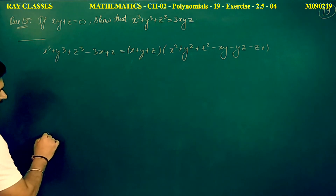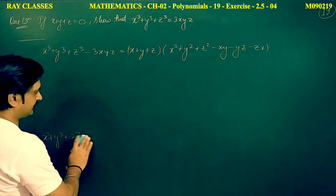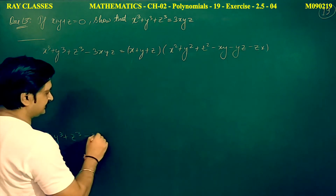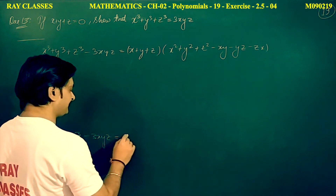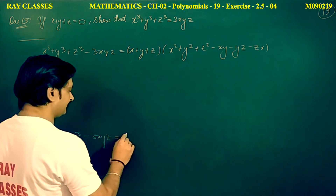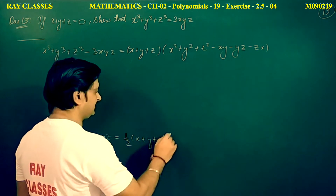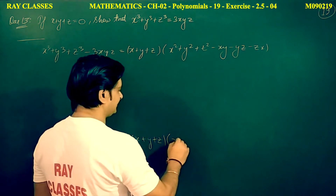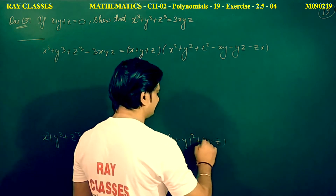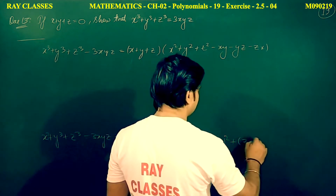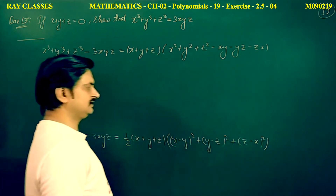The value of this formula is: x cubed plus y cubed plus z cubed minus 3xyz equals 1/2 times (x plus y plus z) multiplied by (x minus y) whole square plus (y minus z) whole square plus (z minus x) whole square. We have to prove this.